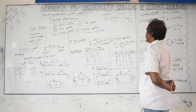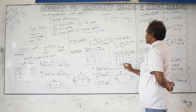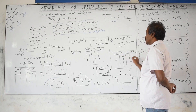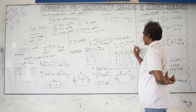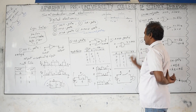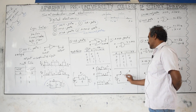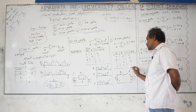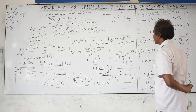The AND gate has output Y = A·B (A multiplied by B). Truth table: 0×0 = 0; 0×1 = 0; 1×0 = 0; 1×1 = 1. Output is high only when both A and B are high. The mechanical equivalent is two switches in series — both must be closed for current to pass and the bulb to glow.